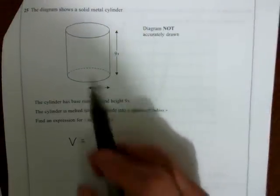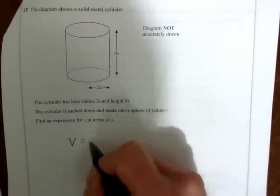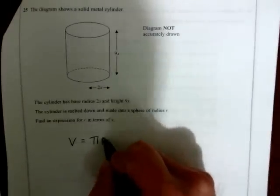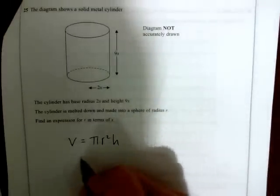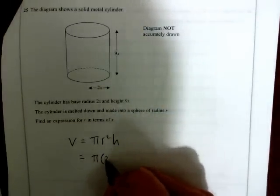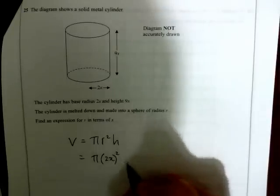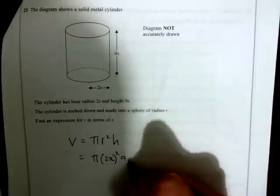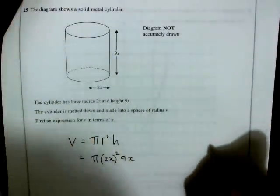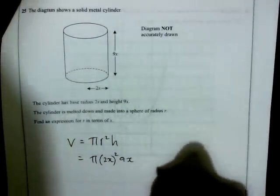Start by finding the volume of the cylinder. The volume is π times r squared times h, which is π times (2x) squared times 9x. Squaring 2x gives 4x squared.